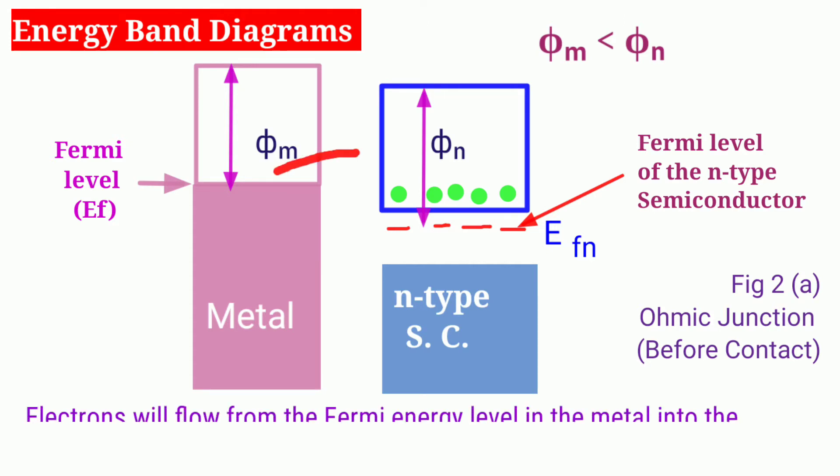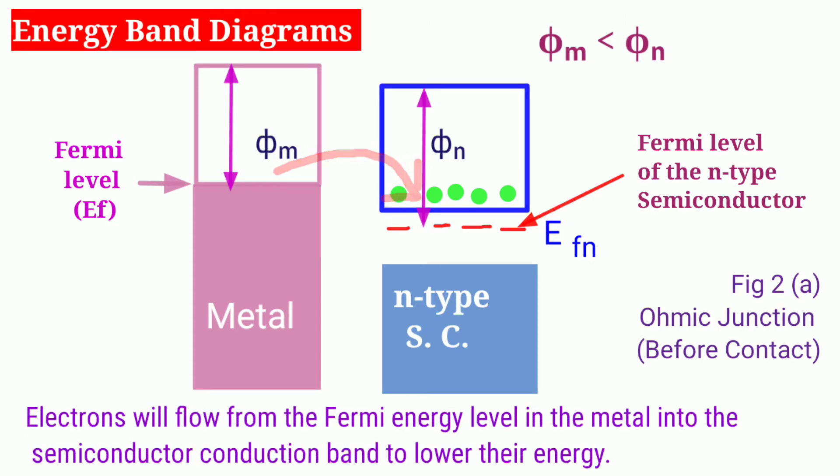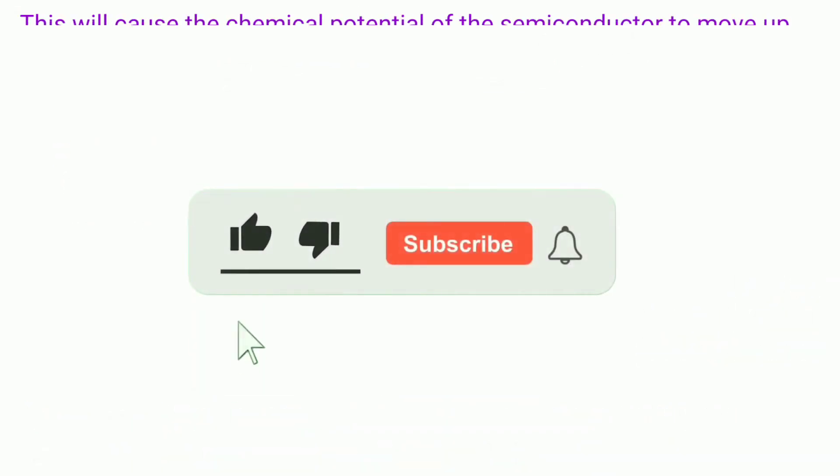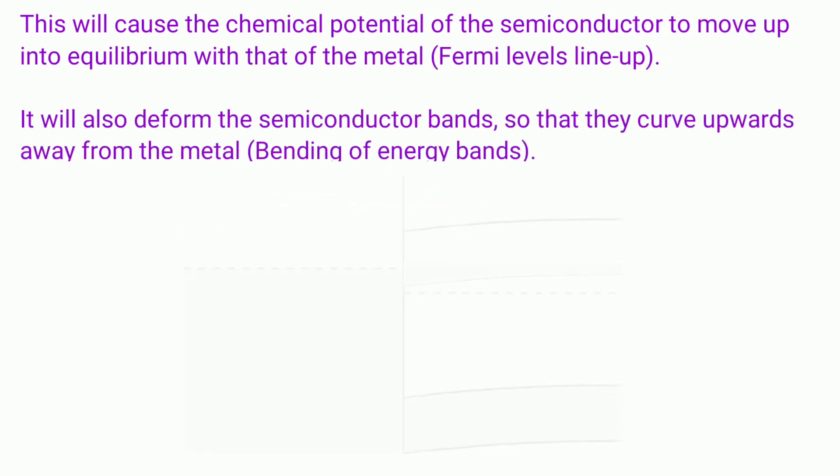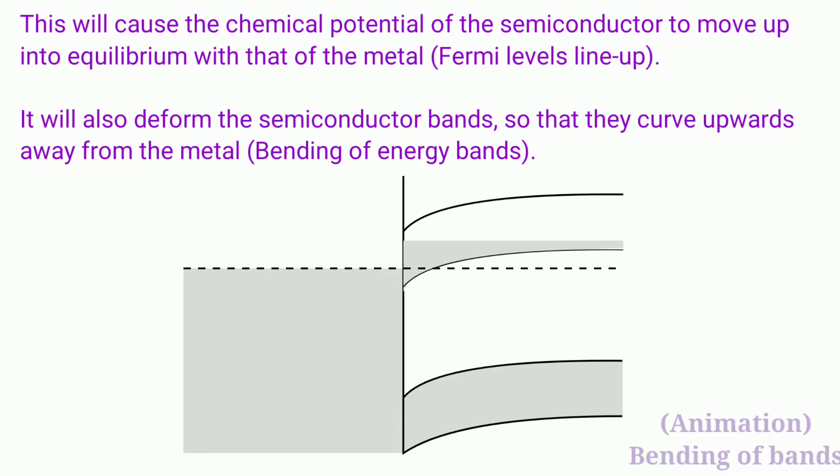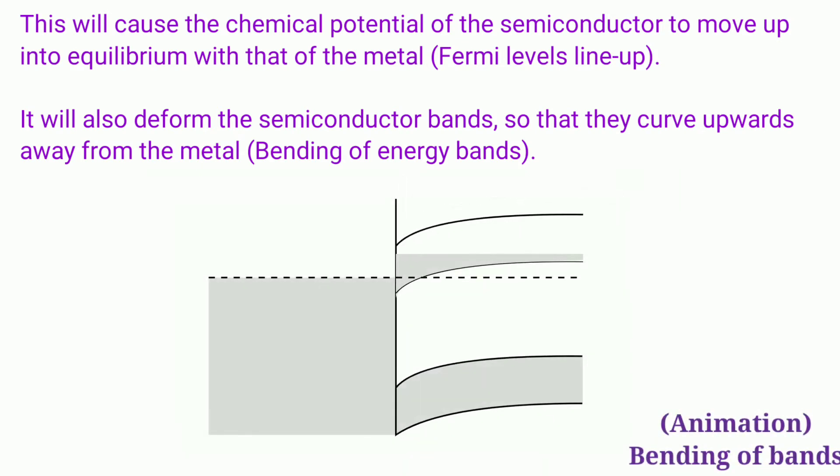At equilibrium electrons move from the metal to the empty states in the conduction band. This will cause the chemical potential of the semiconductor to move up into equilibrium with that of the metal. It will also deform the semiconductor band so that they curve upward away from the metal. This is called bending of energy bands as shown here in this animation.